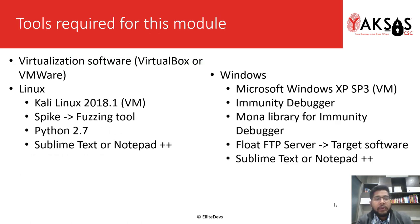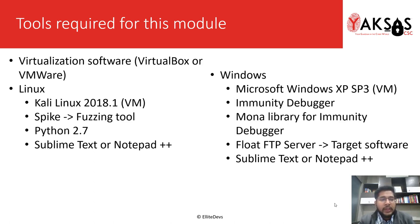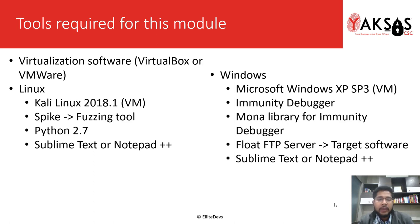The tools we'll be requiring for this module are a virtualization software — it can be VirtualBox or VMware, whichever you are comfortable with — and we'll be needing two operating systems. One is Linux, that will be our attacking machine, and a Windows machine that will be the target. For Linux, I will be using Kali Linux 2018.1 as a VM, Spike fuzzing tool which comes inbuilt into Kali Linux, Python 2.7, and Sublime Text or Notepad++.